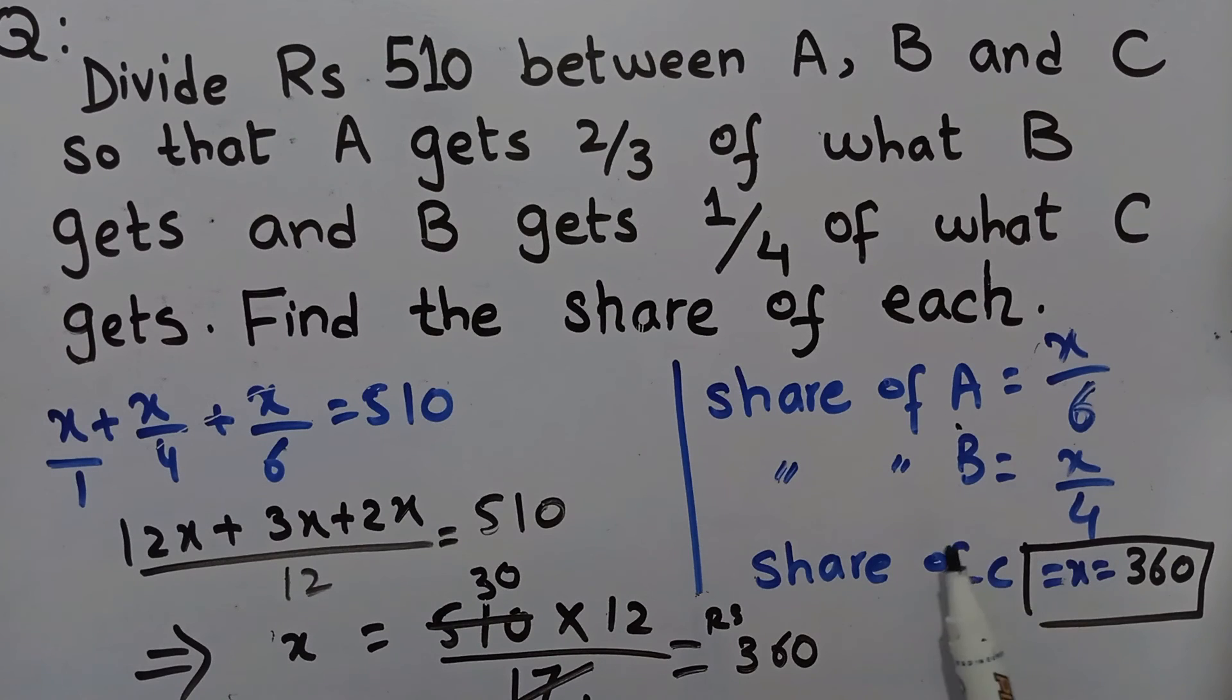Now for A's share, we divide 360 by 6. 6 times 6 is 36, so this will be 60 Rupees.